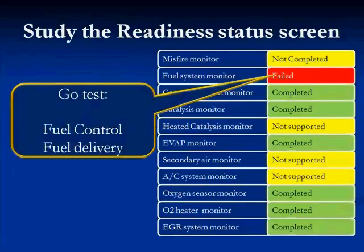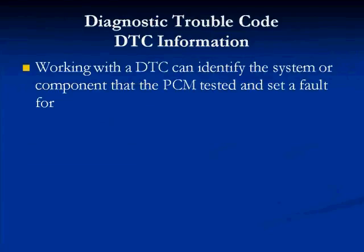When you look at this screen, what is it really telling you? It's telling you to go test fuel control and fuel delivery. Because the oxygen sensor monitor ran, it completed, and it passed — by it passing, it tells us that the oxygen sensors are good. Good enough that the computer didn't fail them. You can bypass testing the oxygen sensors because the computer likes those oxygen sensors. If it didn't like them, it would say 'failed.' If it never ran them, it would say 'not complete.' If you saw fuel system failed and oxygen sensor monitor not complete, you'd have to start testing with the oxygen sensors to see why that monitor didn't run.